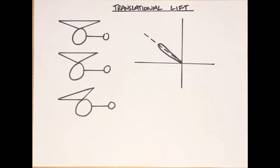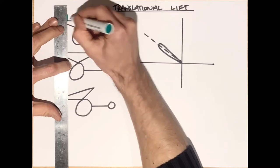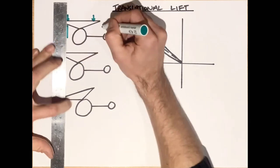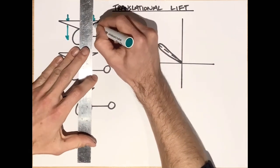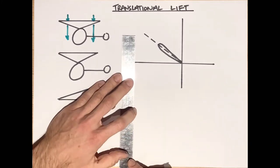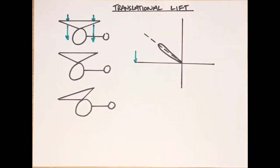So translational lift - what we're looking at here is essentially the movement of a helicopter from the hover off into forward flight and away from the ground. We're going to start by just using a little bit of wind as opposed to actual forward speed. Starting with the helicopter in the hover - if we're just sat in the hover, in ground effect or out of ground effect, all we have is induced flow coming down through the disc.